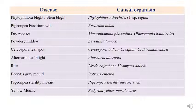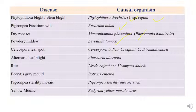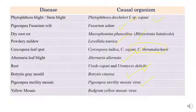These are all the list of important diseases in redgram: Phytophthora blight or stem blight caused by Phytophthora drechsleri f.sp. cajani; Fusarium wilt caused by Fusarium udum; dry root rot caused by Macrophomina phaseolina, new name Rhizoctonia bataticola; powdery mildew by Leveillula taurica; Cercospora leaf spot by Cercospora indica, Cercospora cajani, Cercospora thurmulachari; Alternaria leaf blight by Alternaria alternata; rust by Uredo cajani or Uromyces dolichi; Botrytis gray blight by Botrytis cinerea; sterility mosaic caused by PGPN sterility mosaic virus; and yellow mosaic by pigeonpea mosaic virus.